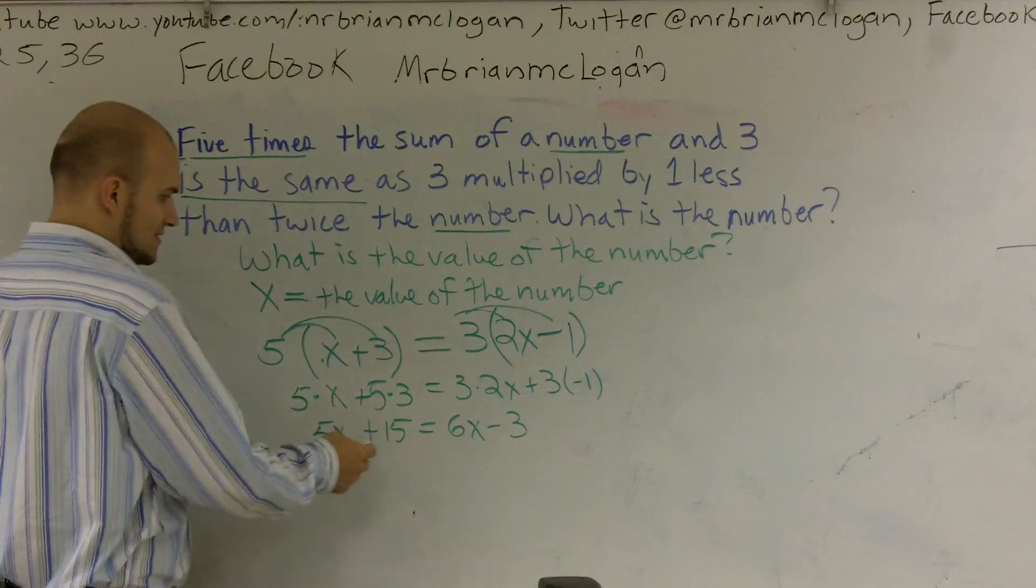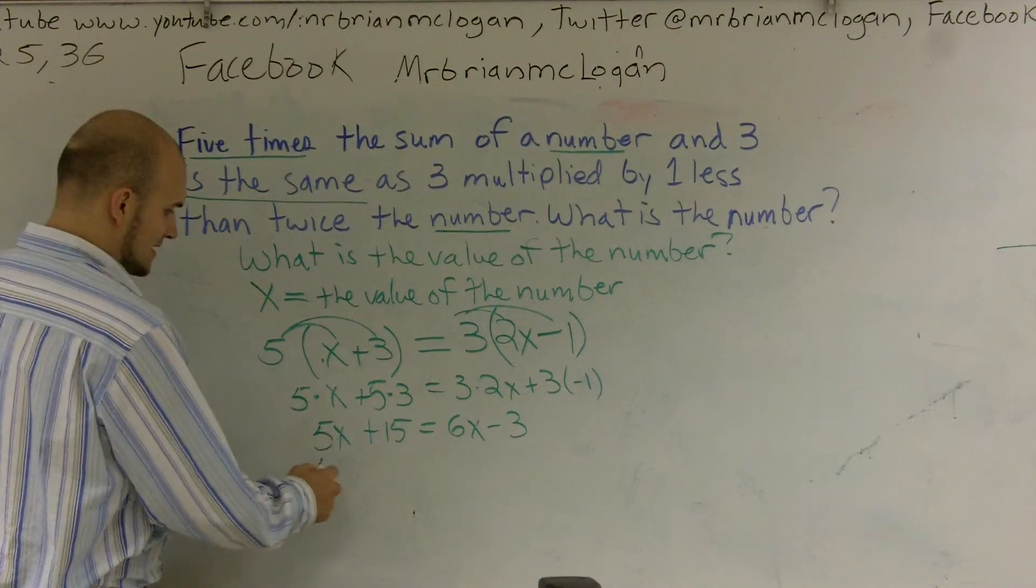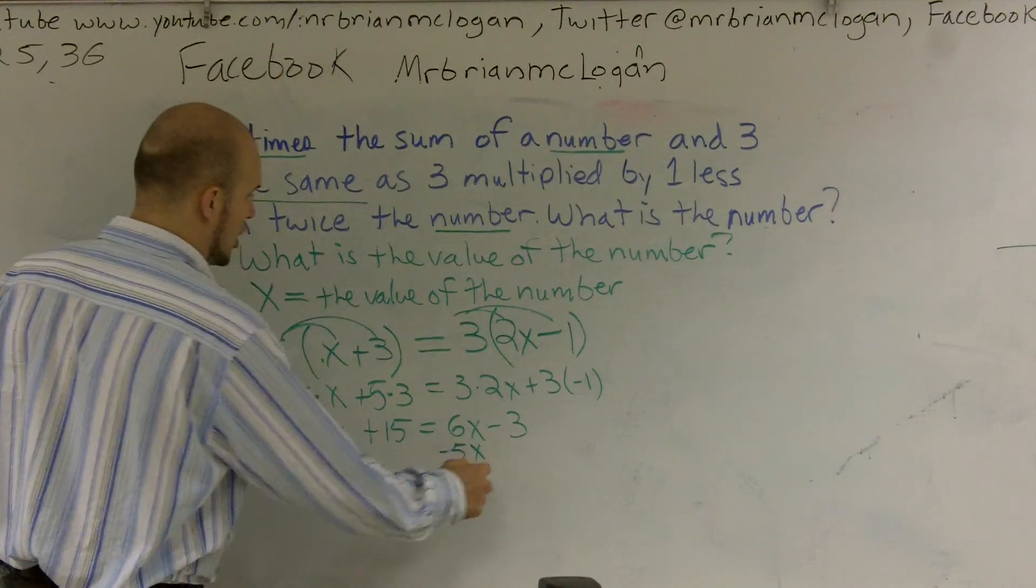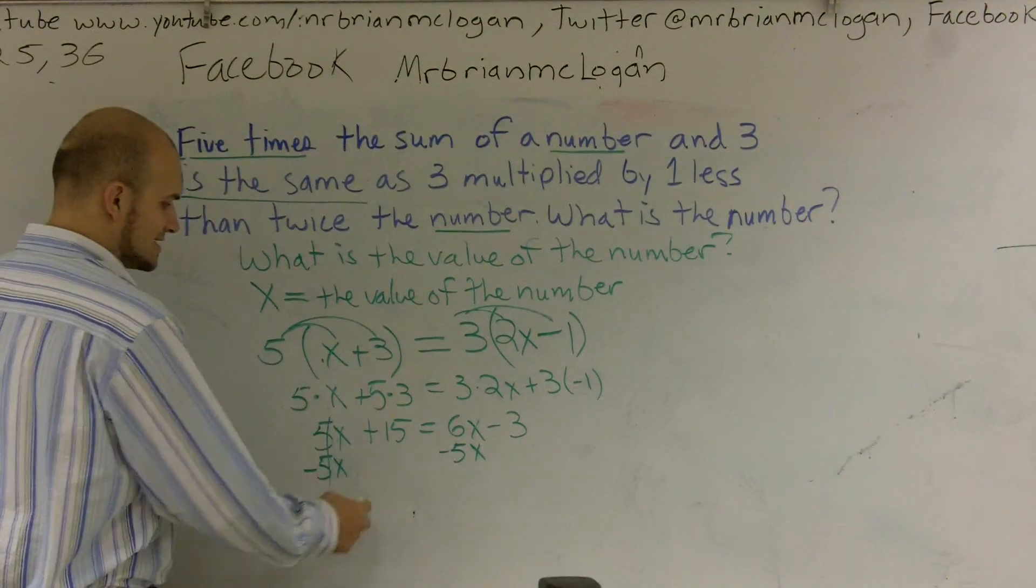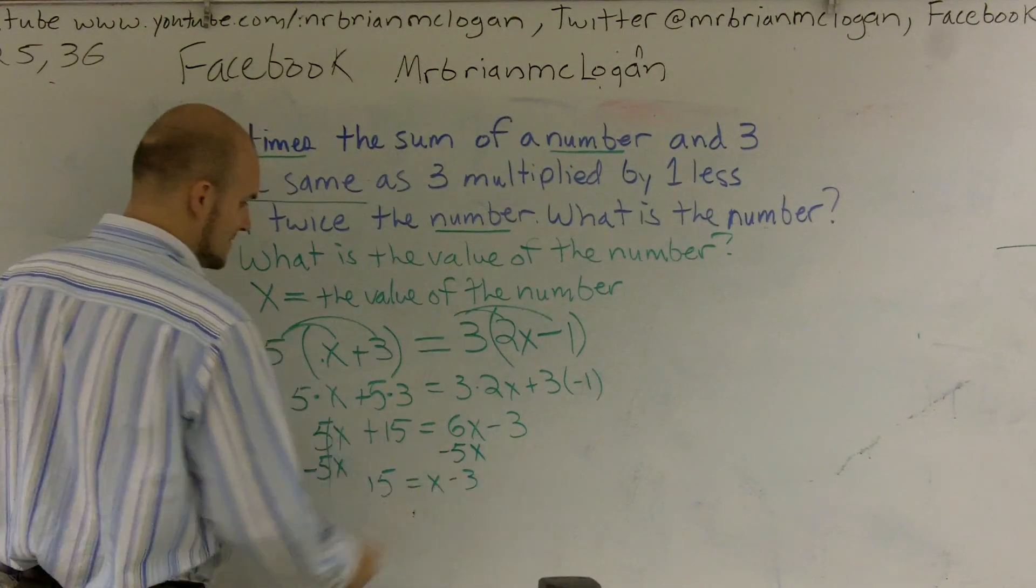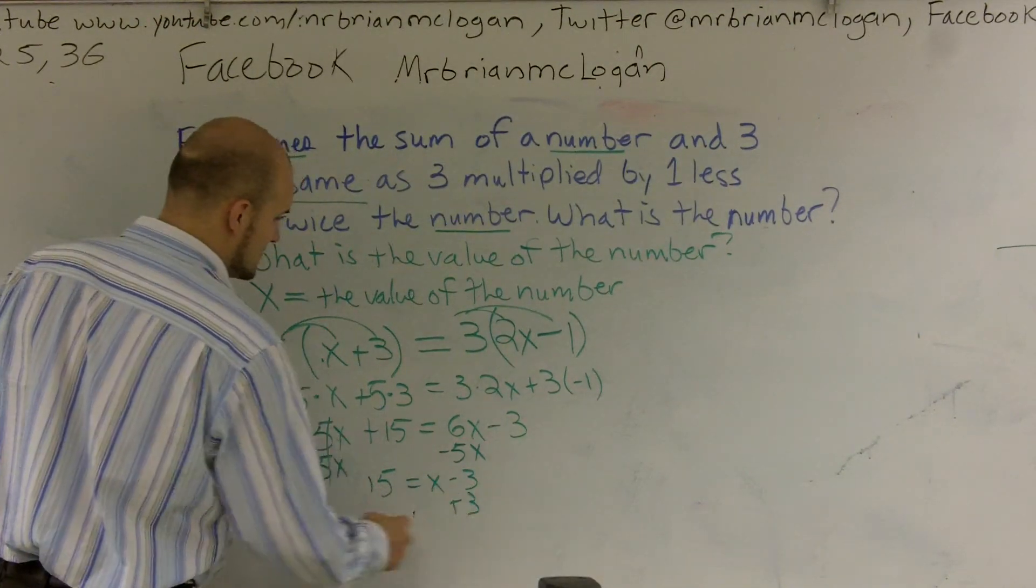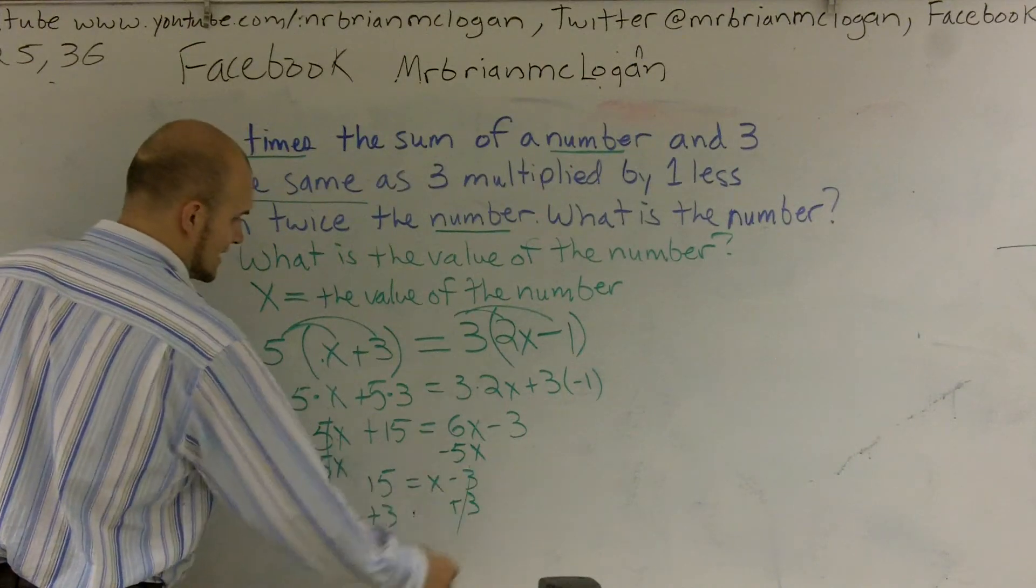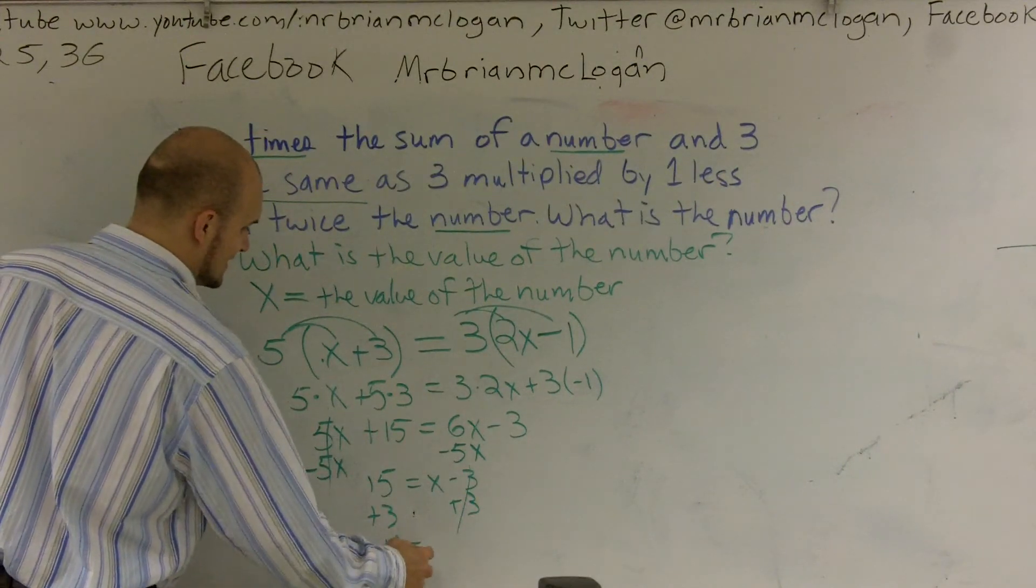So now I need to get my variable on the same side. I'm going to get rid of the variable on the left side. So I'm going to subtract all 5 x's, so I'll cancel out to 0. So I get 15 equals x minus 3. Then I'll add the 3. Those will cancel out. Give me 18 equals x.